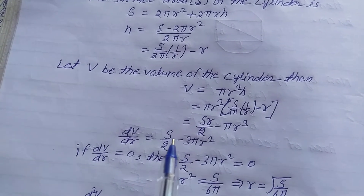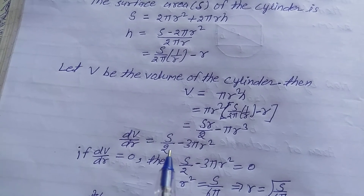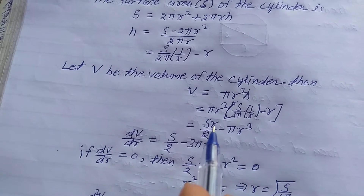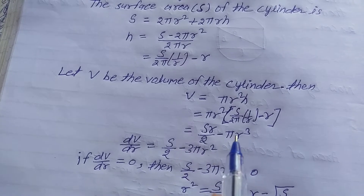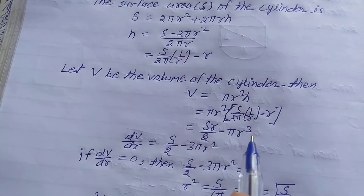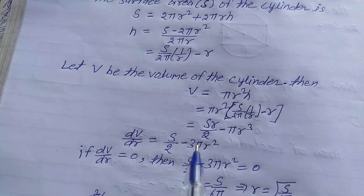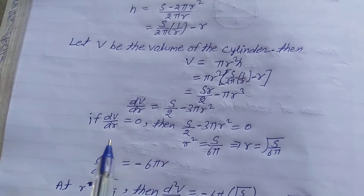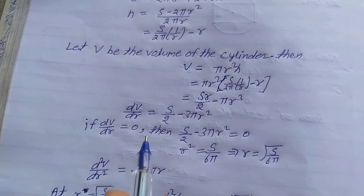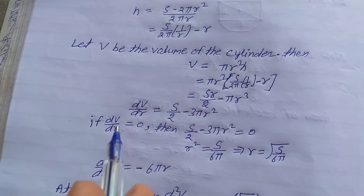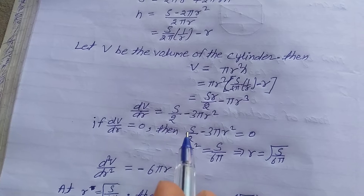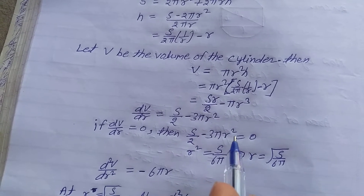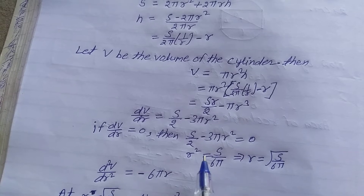Differentiating with respect to r: dV/dr = S/2 − 3πr². For the critical point, set dV/dr = 0, so S/2 − 3πr² = 0, giving r² = S/(6π), therefore r = √(S/6π).